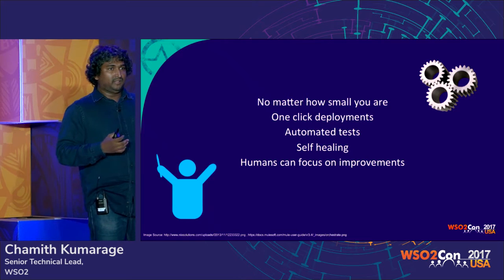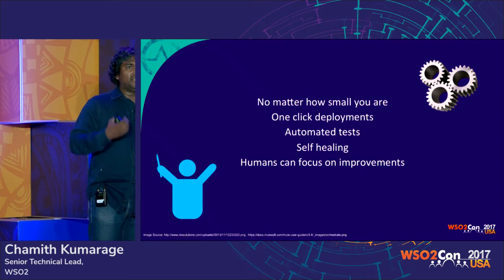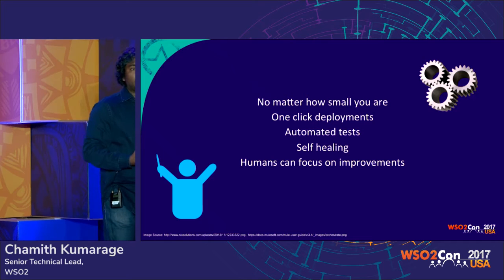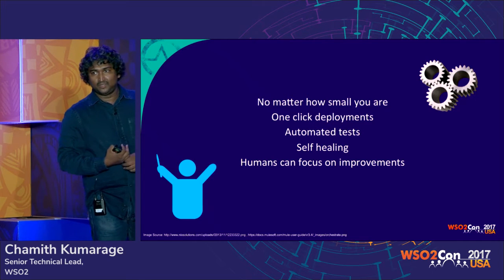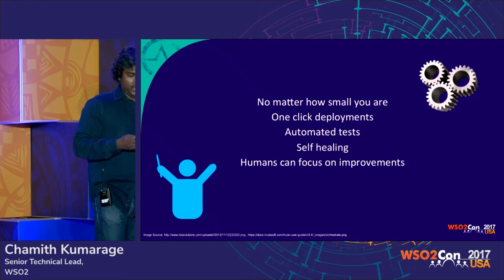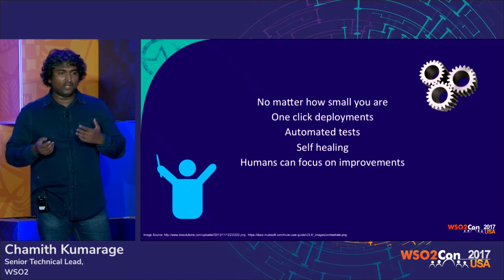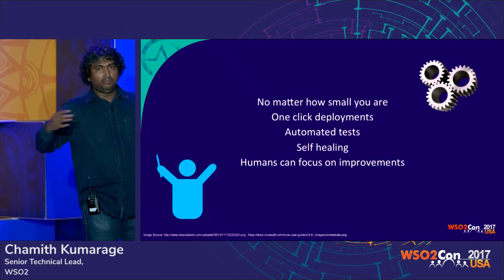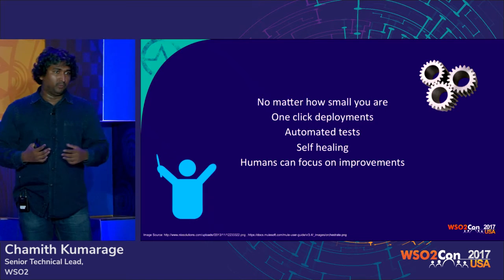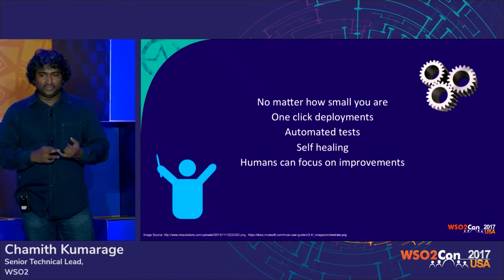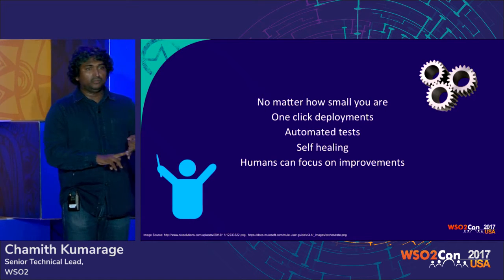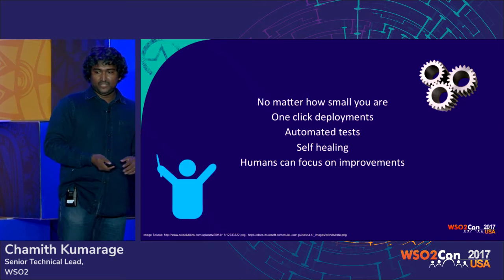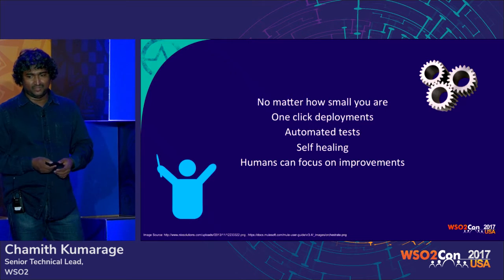Having proper automation and orchestration is what enables self-healing. With all these automation and orchestration pieces in place, what does the human have to do? They can always focus on improvements — that improves team productivity and enables you to always focus on the next level once these small bits and pieces are in place.